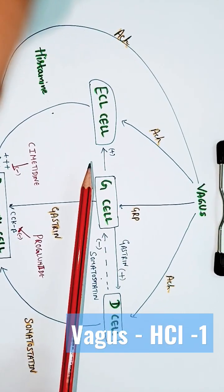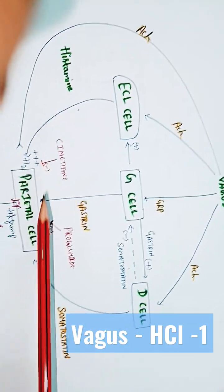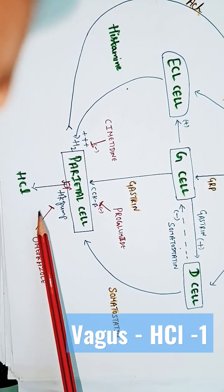At the same time, you can see vagus stimulates enterochromaffin-like cell that releases histamine that acts on parietal cell and stimulates HCL production.